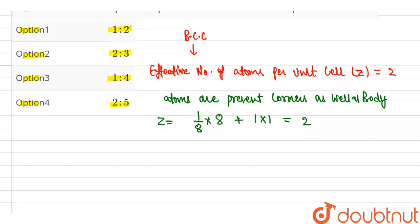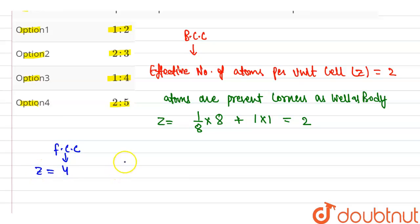Now let's discuss FCC. In FCC, the effective number of atoms per unit cell, that is Z, is equal to 4.